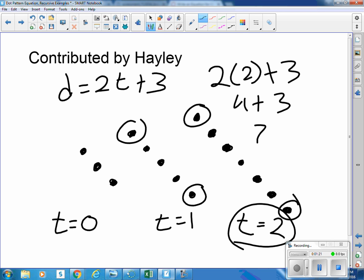So as a recursive function, we could say f of zero equals three, and f of t equals f of t minus one plus two, because I'm adding two each time.